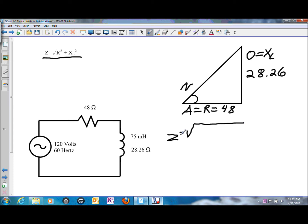We're just substituting in different letters—Z being the impedance, which would be c, and a and b can be the other two sides of the triangle. So Z is equal to the square root of R squared plus XL squared. So that's going to be 48 squared plus 28.26 ohms squared.